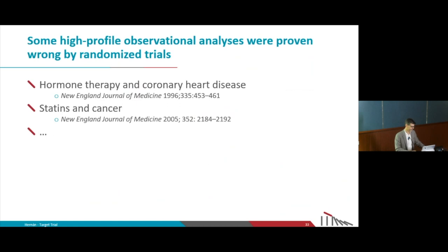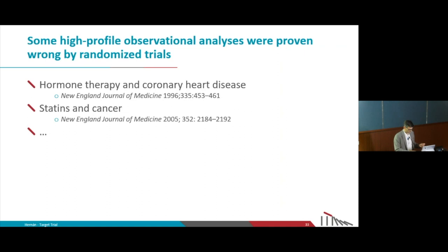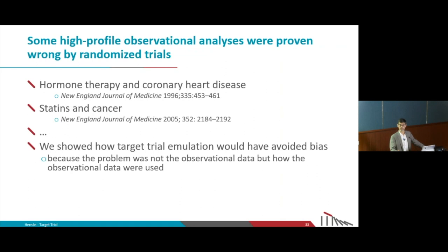These are helpful teaching examples because we know the right answer — we can show how explicit target trial emulation would have avoided the bias. But the comment that we knew the answer sounds as if we may have unconsciously done something with the data we shouldn't have. So let me show you examples of observational emulations of target trials done first, where a randomized trial was then conducted and confirmed what the observational studies found.